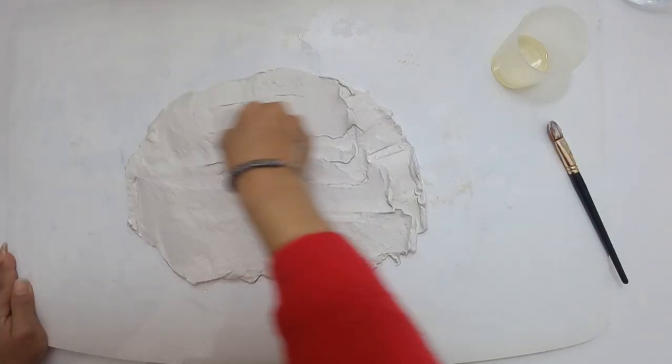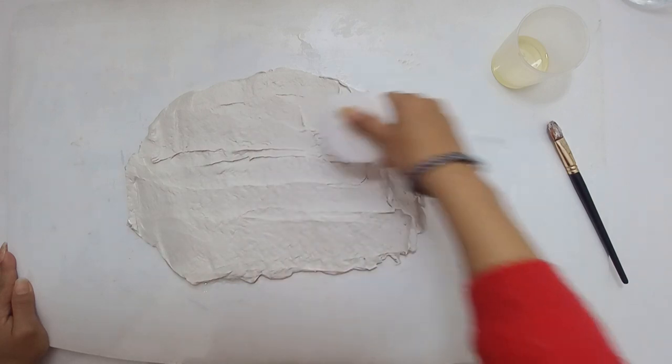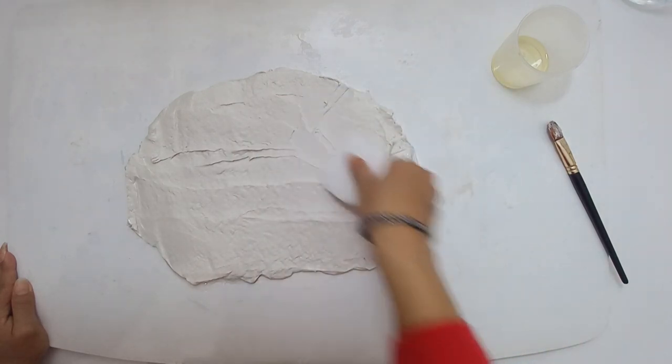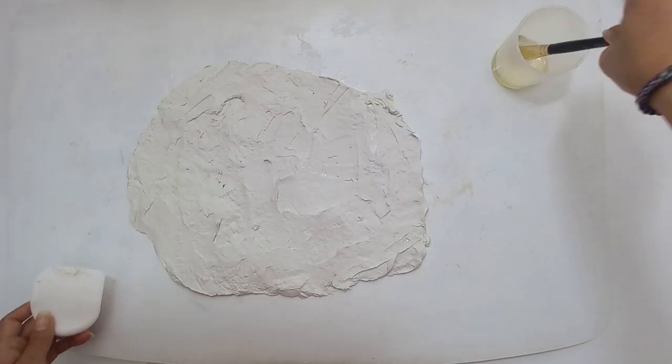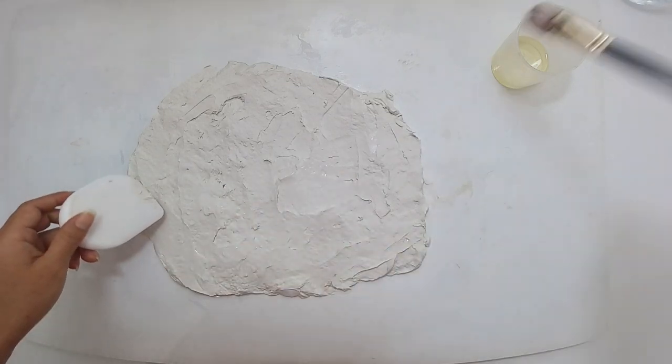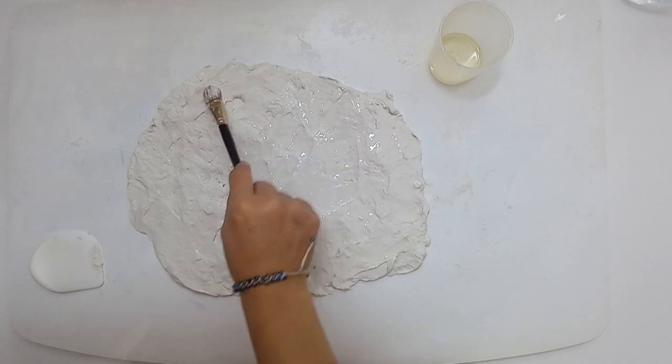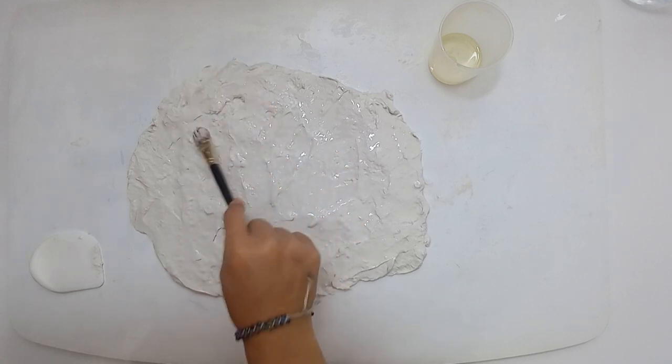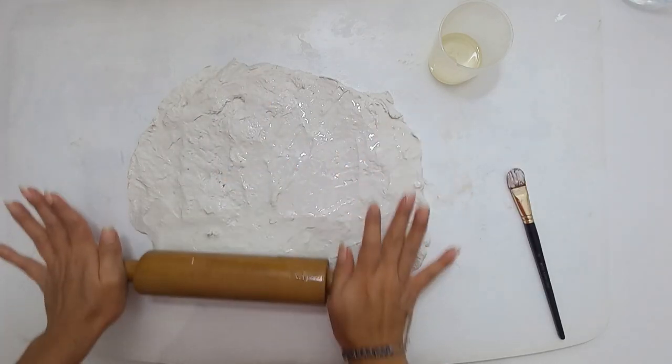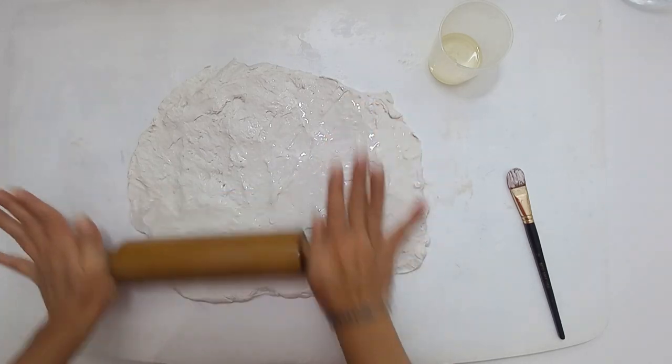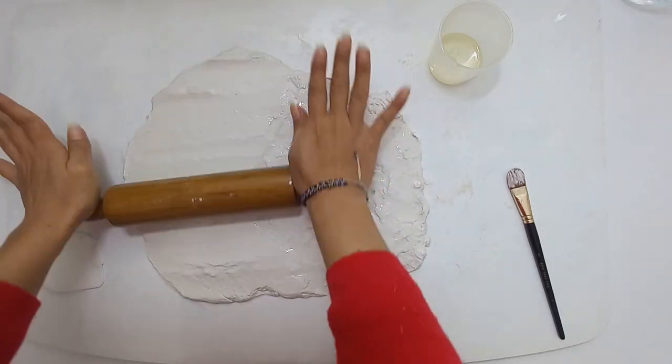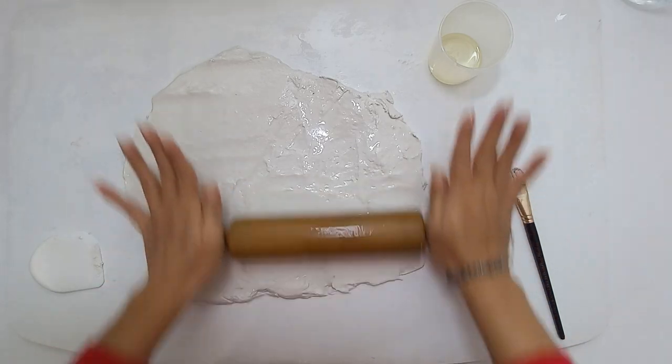We repeat the same process. We spread it as evenly as possible. To help us spread properly we are gonna cover it with a coat of oil. Now we're calling our wood roller to help us. We're going to press it gently so the clay won't stick all over our tool.